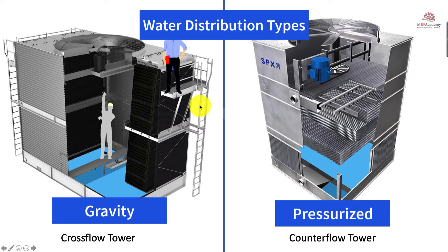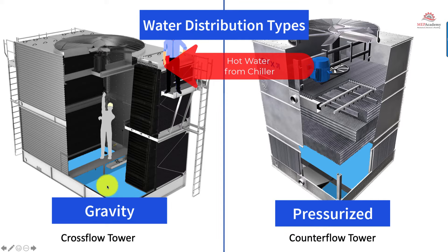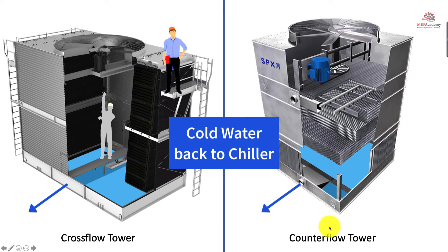In the cross flow, the hot water dumps into the hot water basin at the top, which has little holes in it, and the water trickles out by gravity through the fill into the cold water basin. Both tower types have a cold water basin, from which the cooled water is returned to the chiller to pick up the heat from the water-cooled chiller.